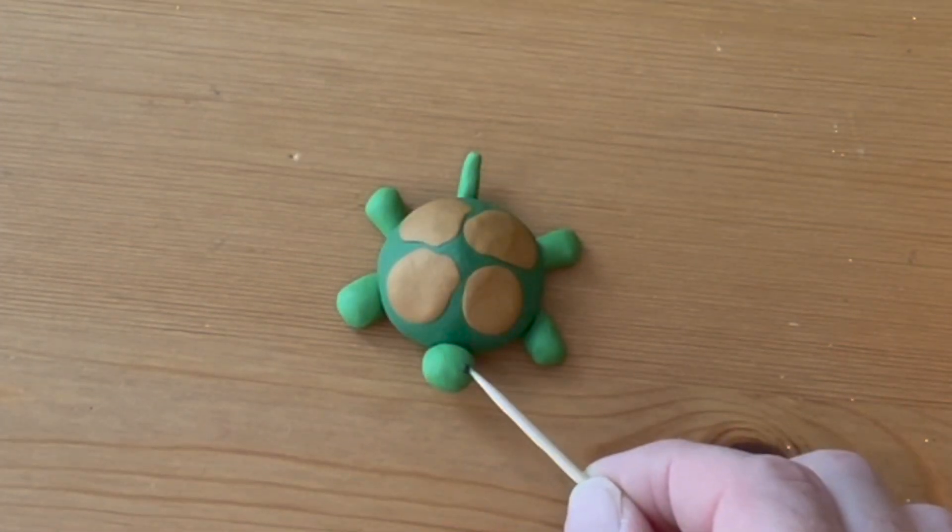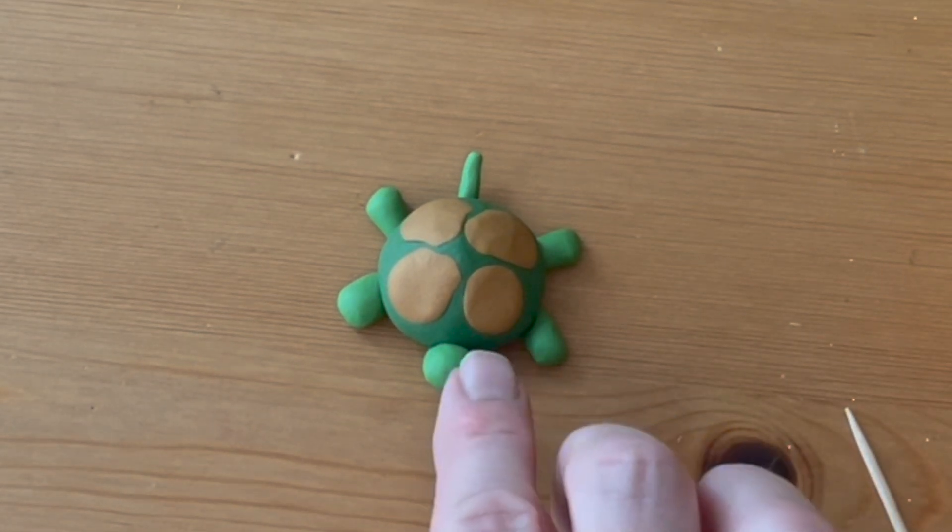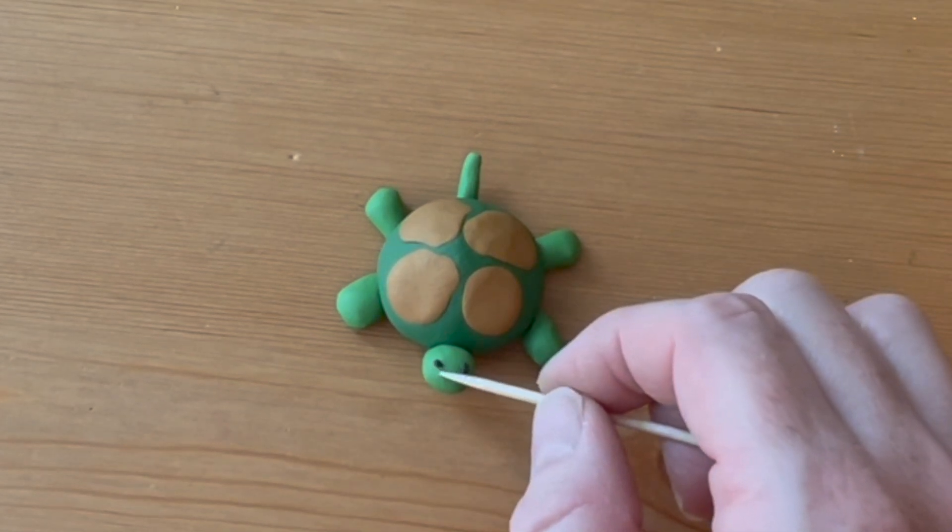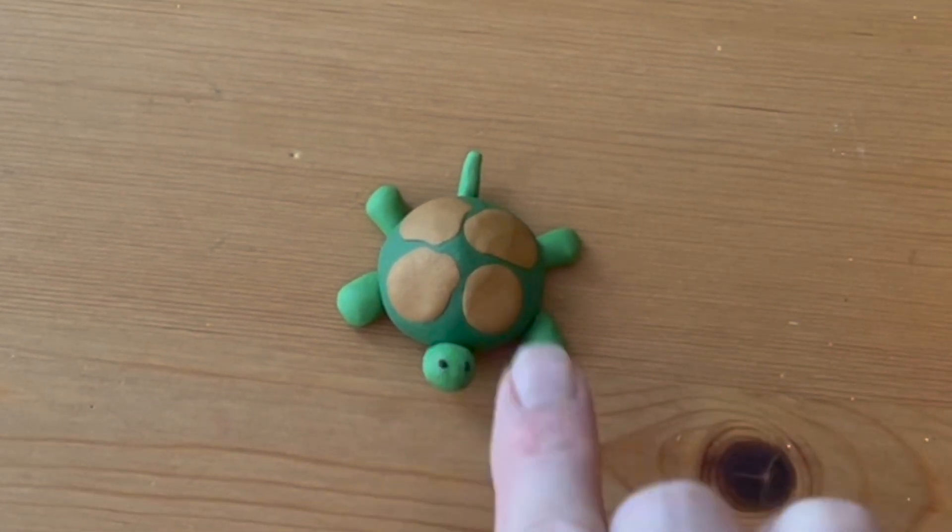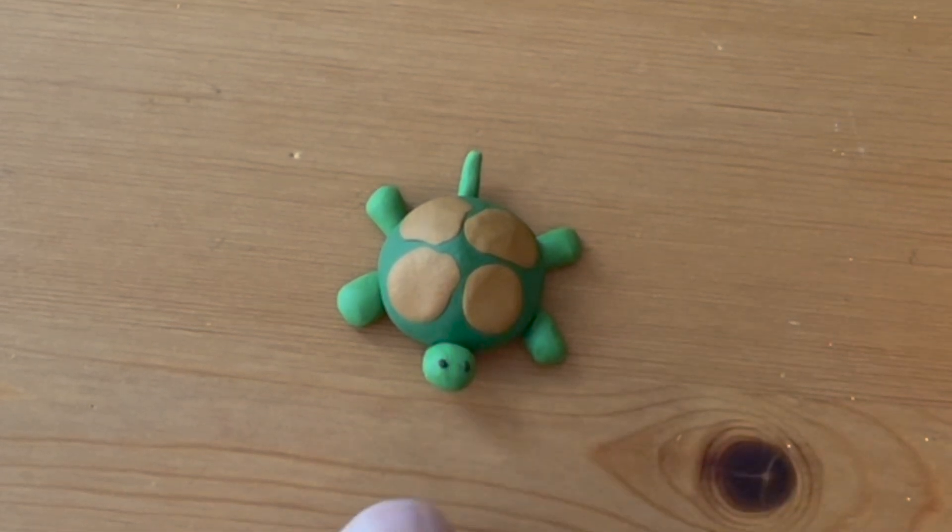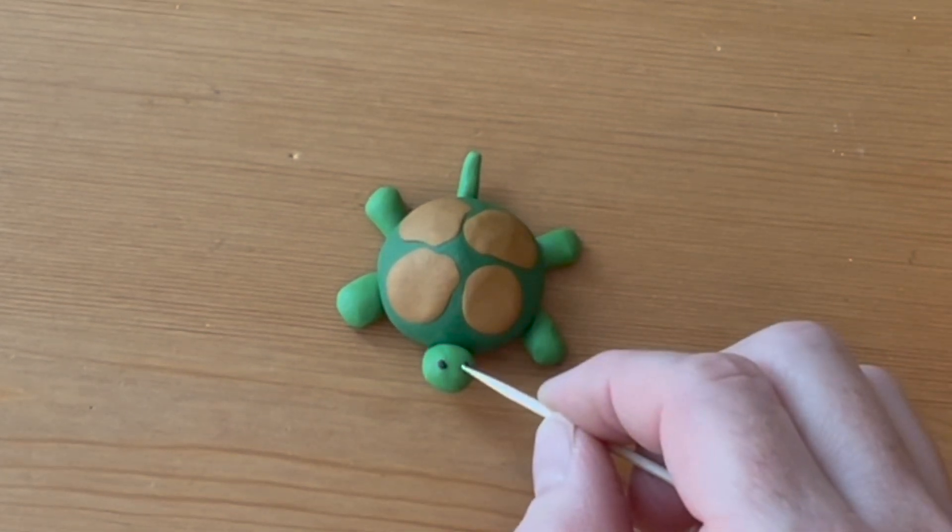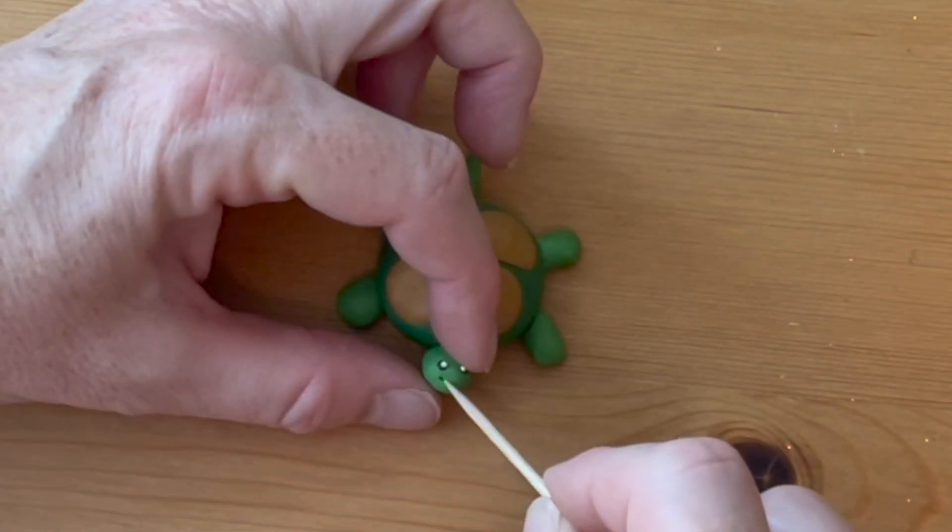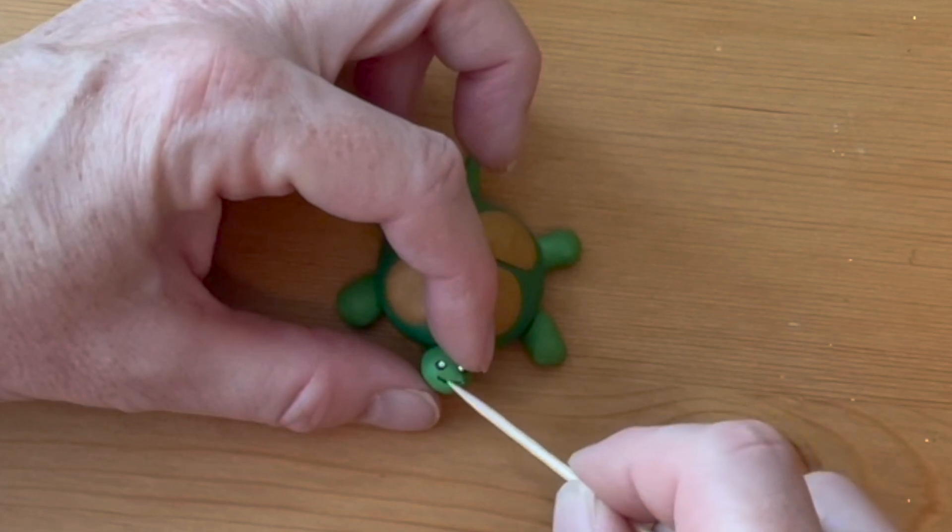Take the tiniest ball of black clay and set it into place with a toothpick to make each eye. Press the eyes in place with your fingers so they're securely stuck on the head. Then take even tinier bits of white clay to make highlights. Use the toothpick again to help. Draw a little smile with the end of the toothpick.